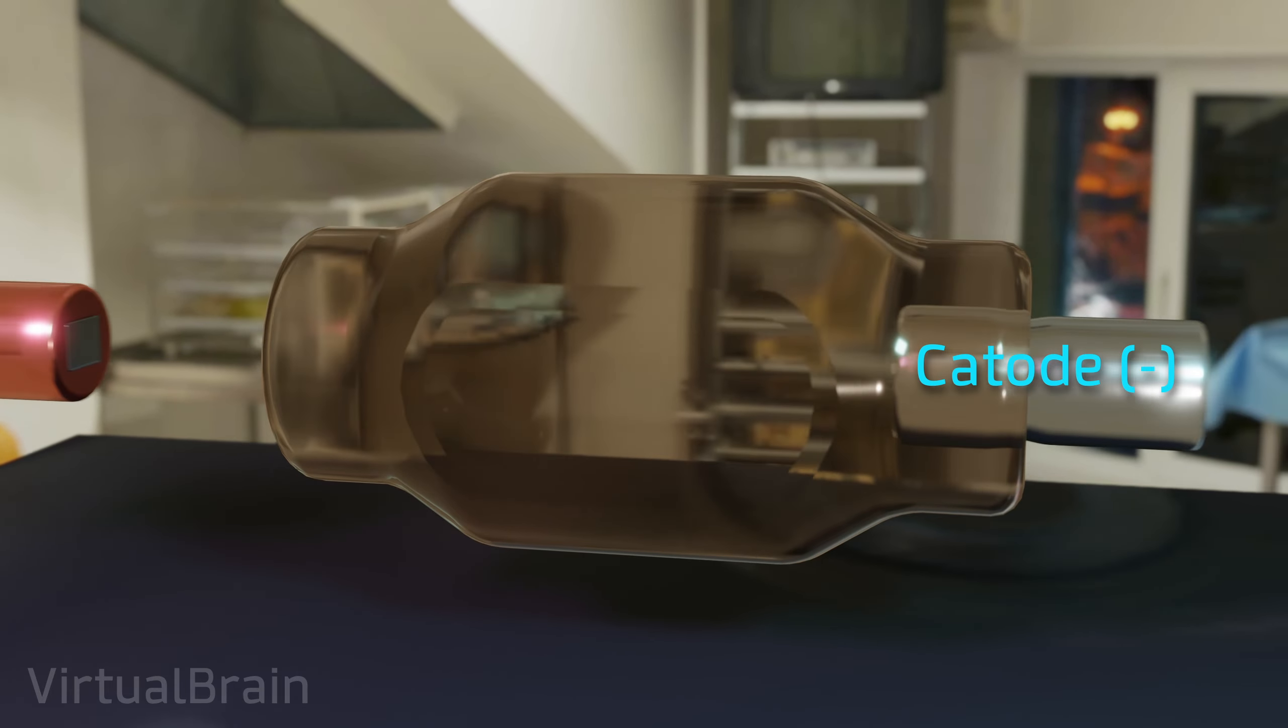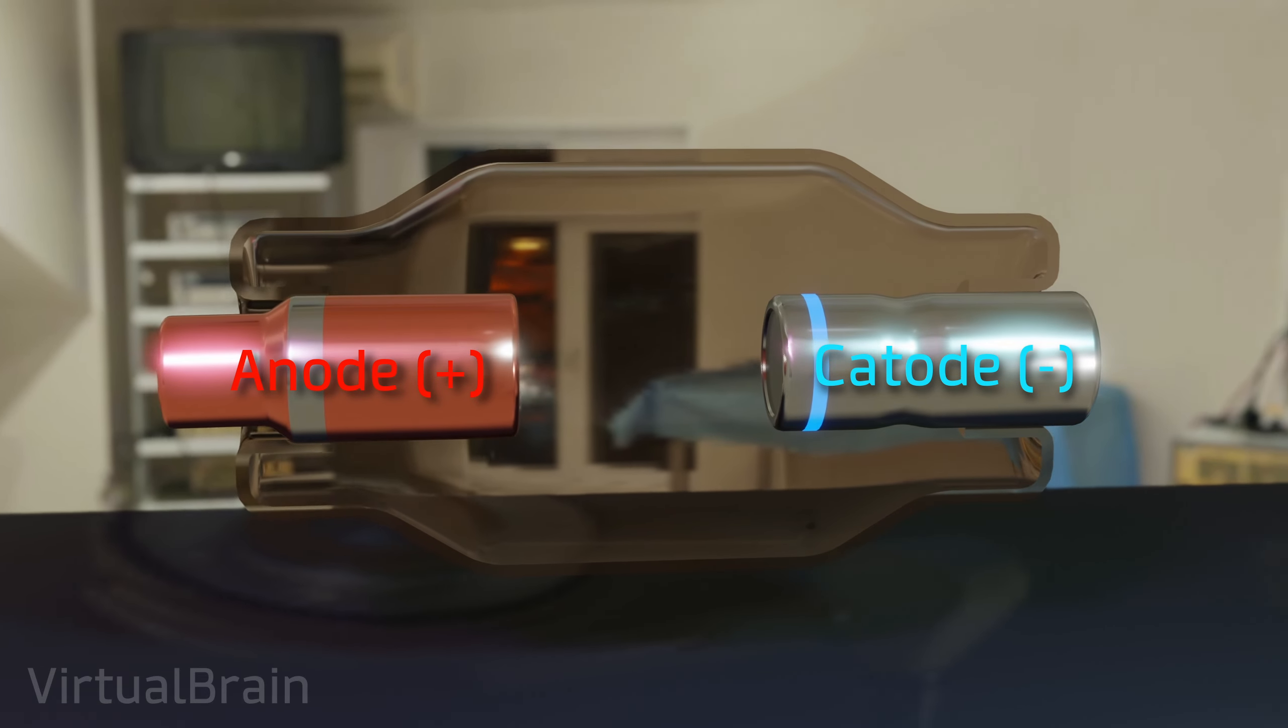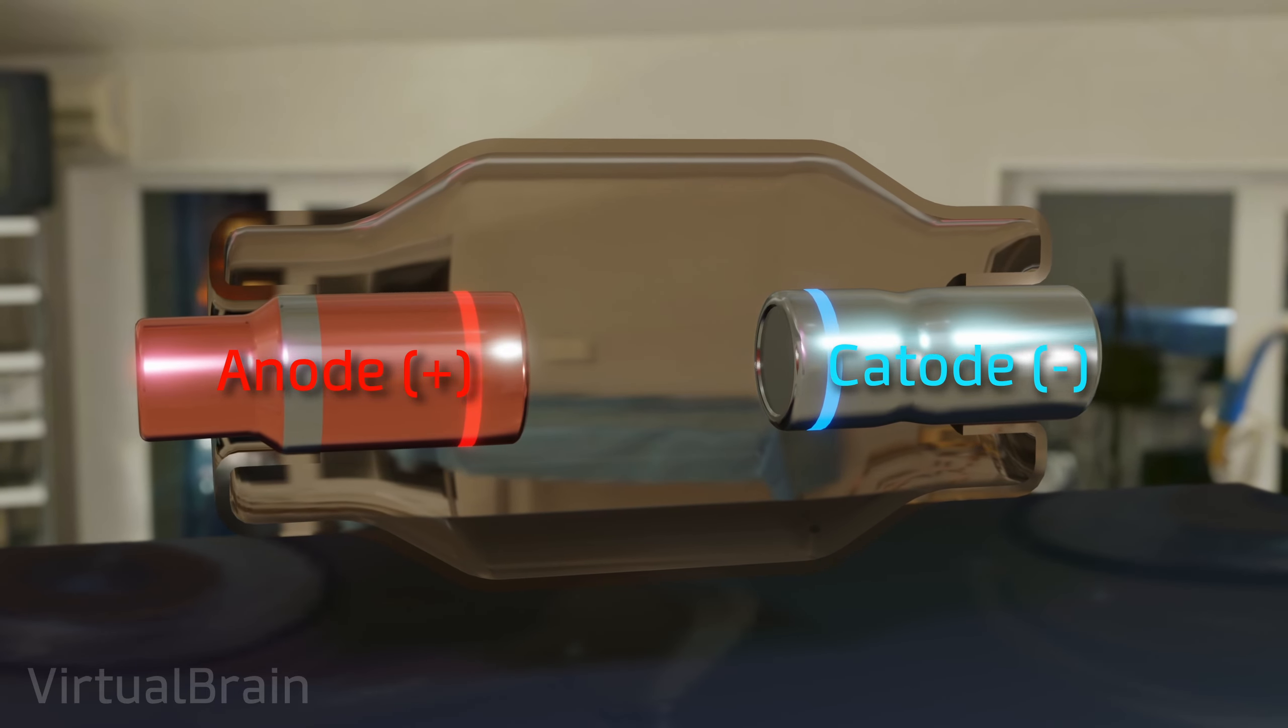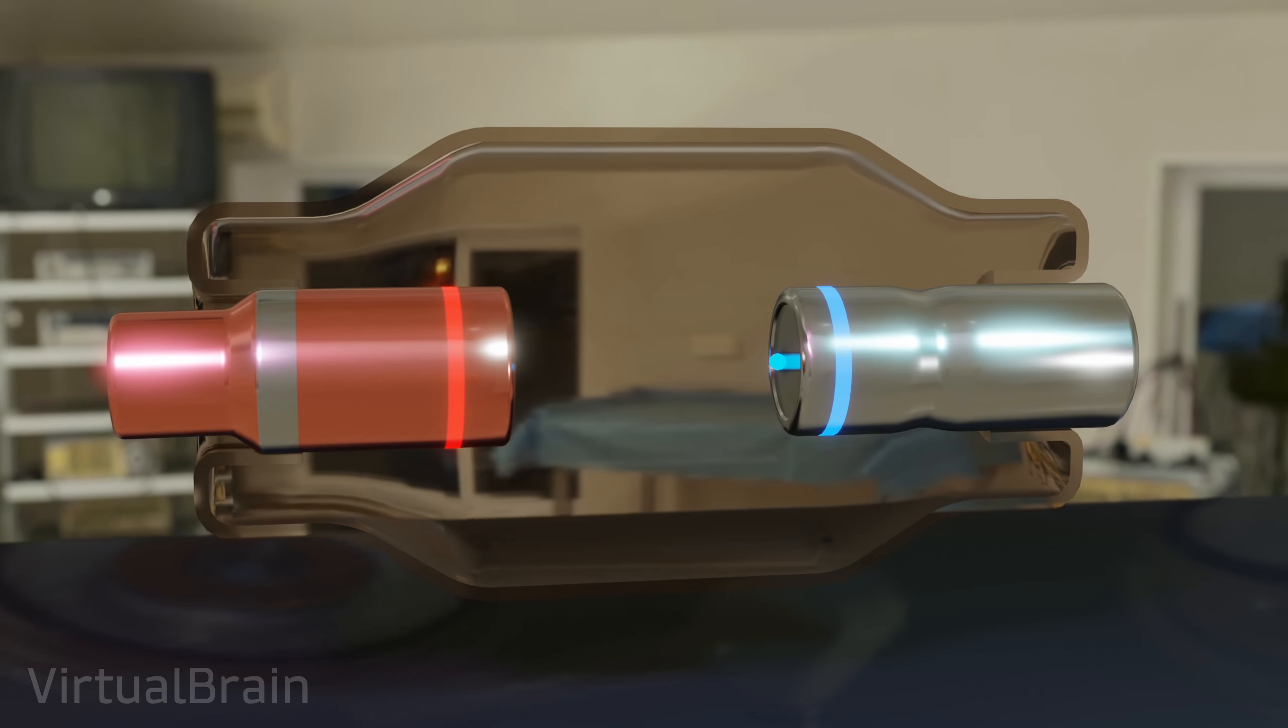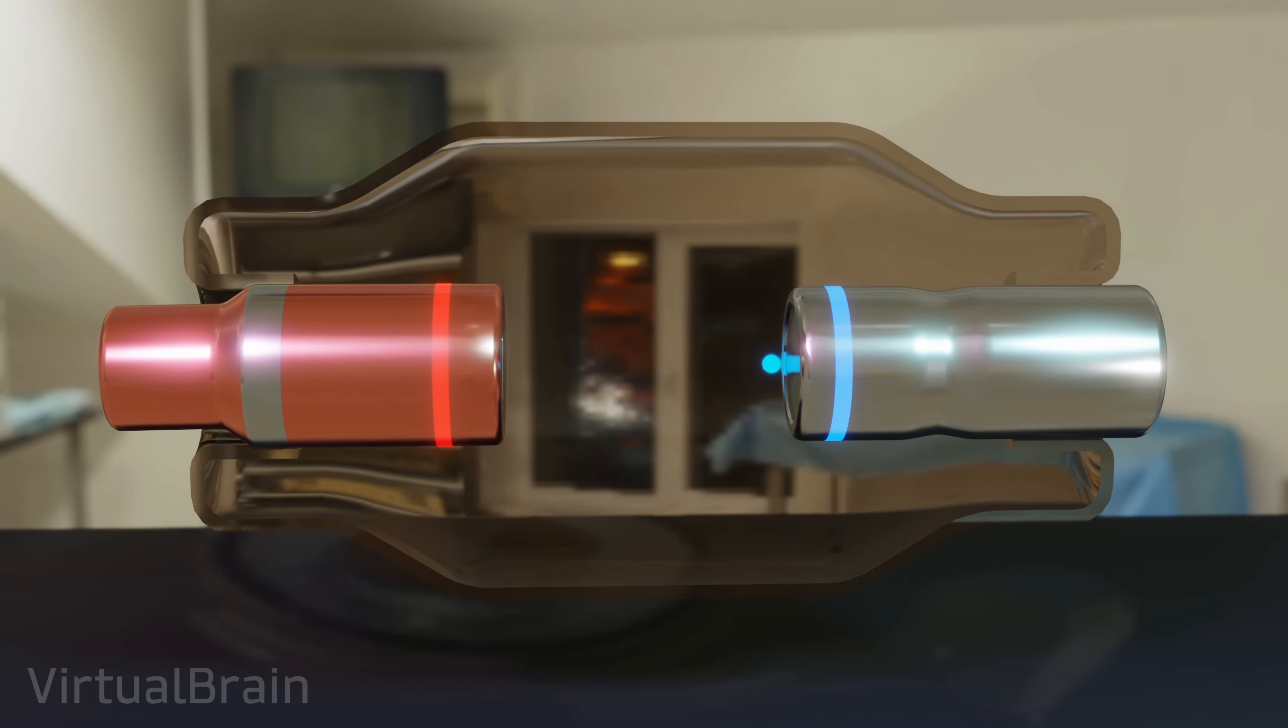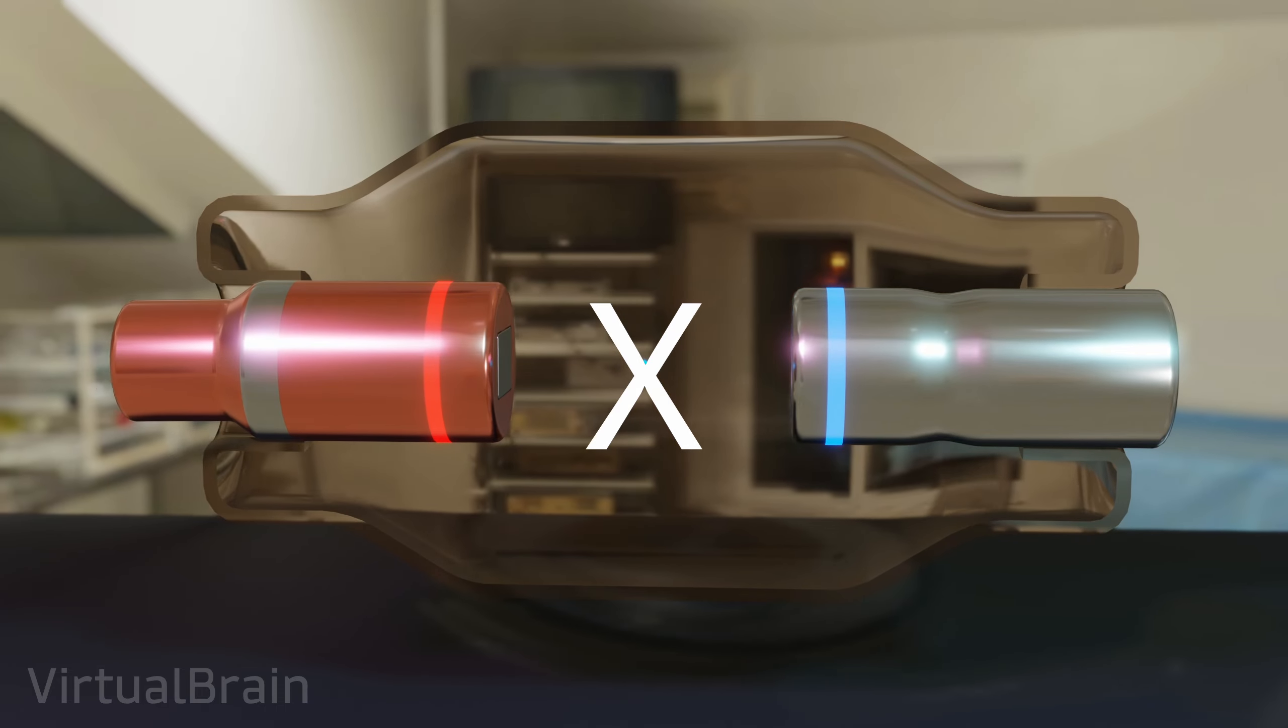Next, we will need a cathode and an anode, or in other words, a negatively charged electrode and a positively charged electrode. Since positive and negative charges attract each other, we might expect that free charges, or electrons, would move from the cathode to the anode. However, this will not happen naturally, as these components are physically separated.